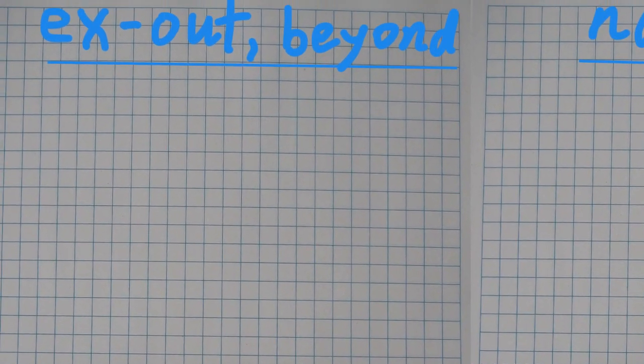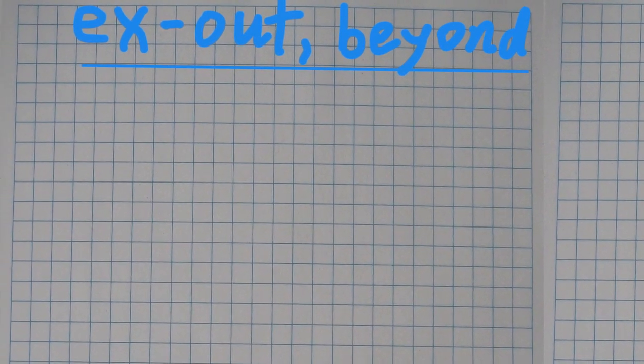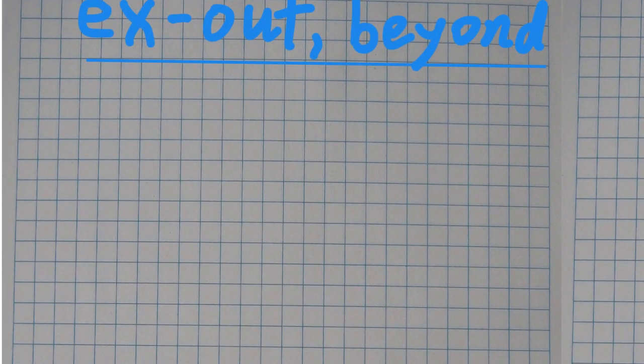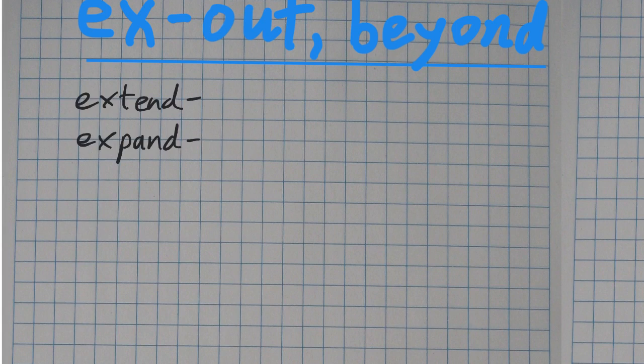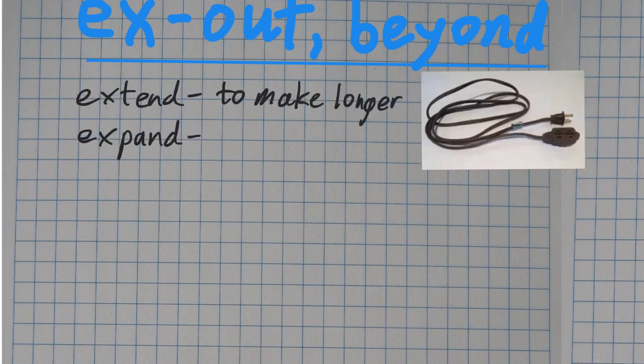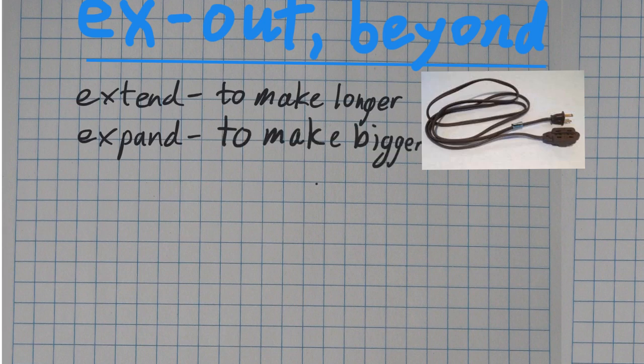We'll start with ex. So a couple of words here. Extend and expand are pretty similar. Extend means to make longer. Often you'll have like an extension cord if you need to make a cord longer. It also could be time, like if you needed more time to write, I could extend your writing time. Expand is very similar, and that one means to make bigger. So kind of like beyond, going beyond the original size would be those two.